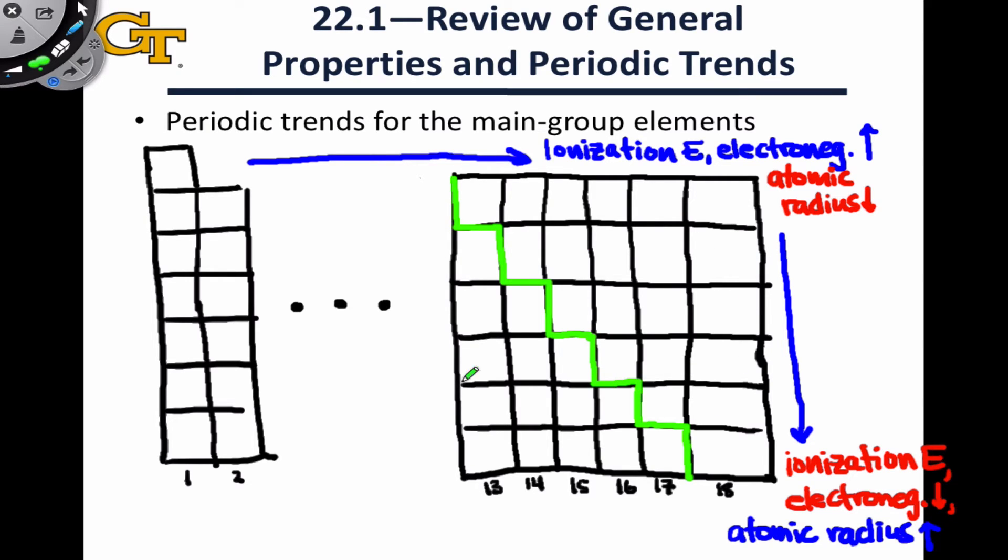Metallic character appears to decrease as we move to the right. We have more metallic elements on the left-hand side of the periodic table, less metallic elements on the right-hand side. This trend goes hand-in-hand with the electronegativity trend. As electronegativity increases, metallic character decreases.